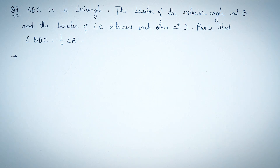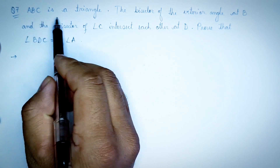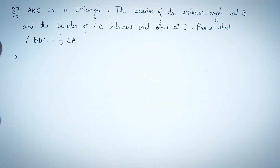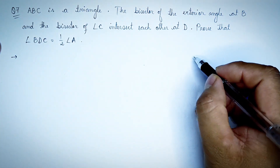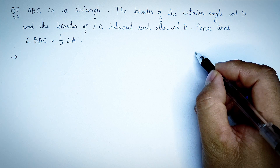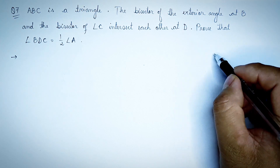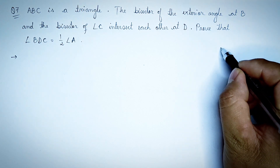This is part of a series of episodes. Question number 7 is about triangle ABC. The first thing you have to do is take the equation for triangle ABC.